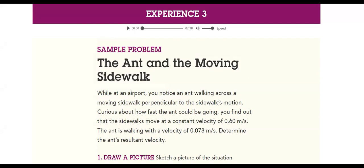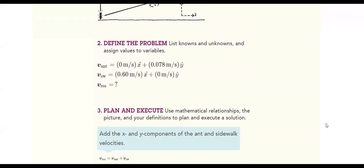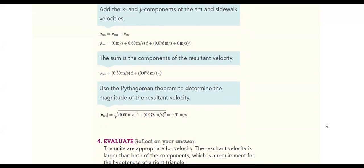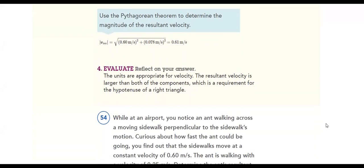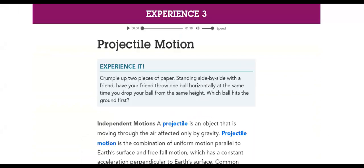We will solve examples: the ant and the moving sidewalk. We will draw, define the problem, plan and execute, then we will evaluate. And then there is an example for you to solve. So a projectile is an object that is moving through the air, affected only by gravity.